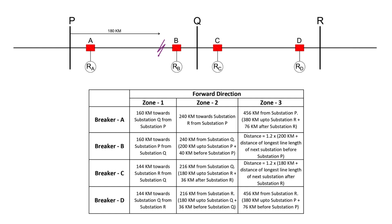Now, let's assume the fault occurs 180 kilometers from substation P. From substation Q, the fault is only 20 kilometers away, so relay B will detect it as a zone 1 fault and trip instantaneously. But from substation P, the fault is outside zone 1 reach, so relay A will detect it as a zone 2 fault. Since zone 2 has a delay, breaker A won't trip immediately.